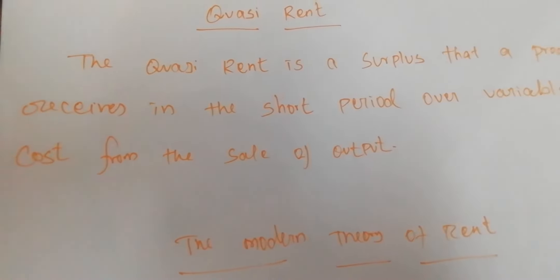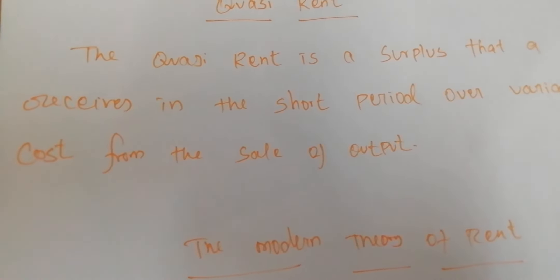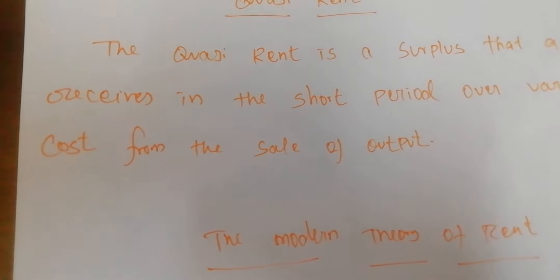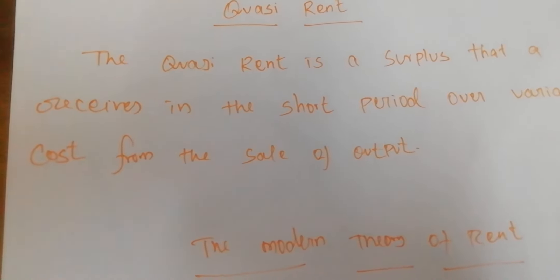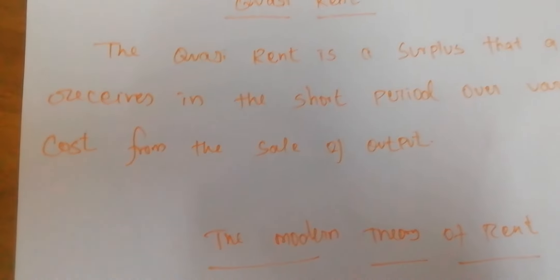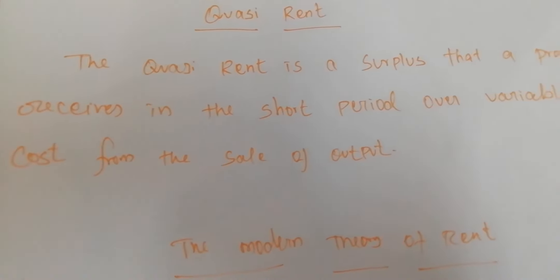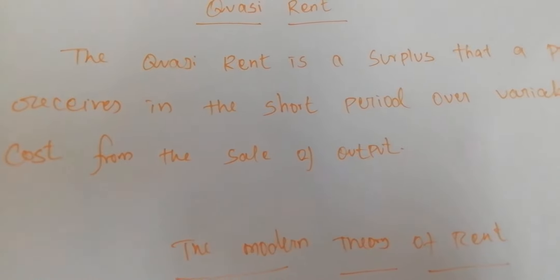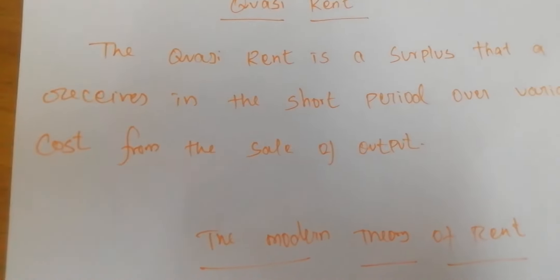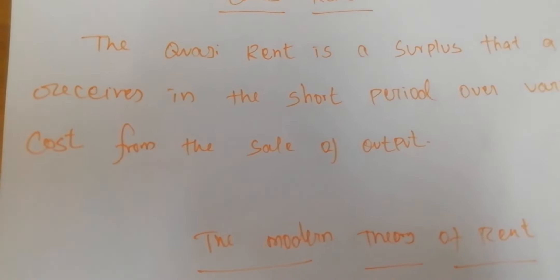Quasi rent is a surplus that a producer receives in the short period over variable cost from the sale of output. Now, regarding the difference between rent and quasi rent: rent accrues to land only. In economics, rent results from the use of land. But quasi rent accrues to man-made appliances — machinery, plant, and everything made by man.